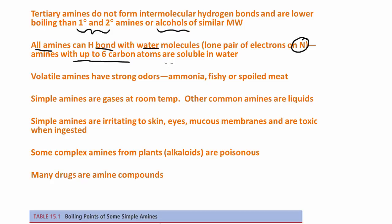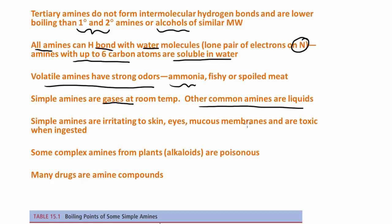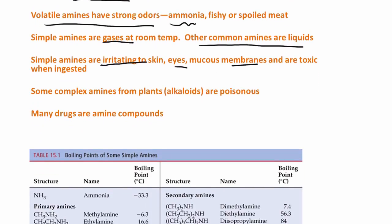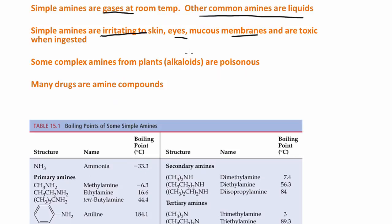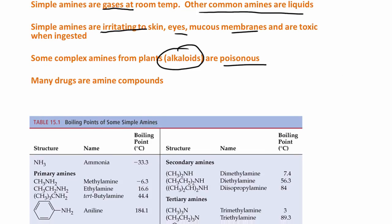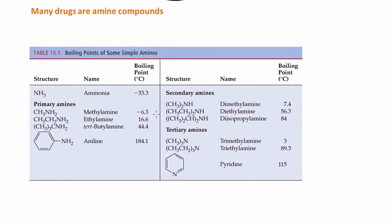Amines with up to six carbon atoms are soluble in water. Volatile amines have very strong odors — they smell bad, usually like ammonia, fishy, or like something spoiling, like garbage. Simple small amines are gases at room temperature; other common amines are liquids. The smaller amines are very irritating to the skin, eyes, and mucous membranes, and they're toxic if you ingest them. Some complex amines from plants, called alkaloids, are poisonous. Many drugs are amine compounds.